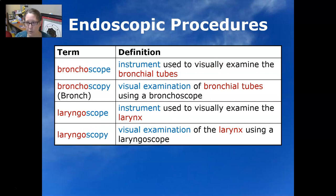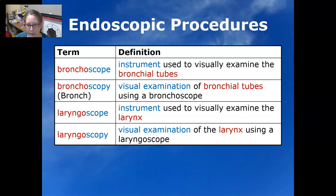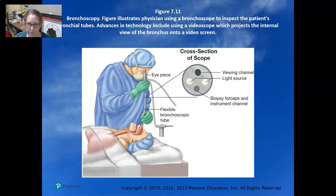A bronchoscope is an instrument used to visualize the bronchial tubes, and bronchoscopy is the visual examination of the bronchial tubes using the bronchoscope — often referred to as a bronch. The laryngoscope is an instrument used to visually examine the larynx, and laryngoscopy is visually examining the larynx using a laryngoscope. Here is an example of bronchoscopy, where they put the tube down through the nose into the lungs to see what's going on.